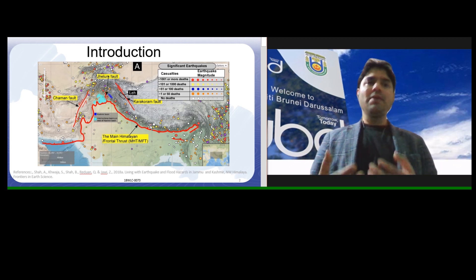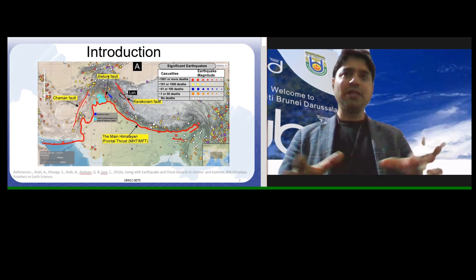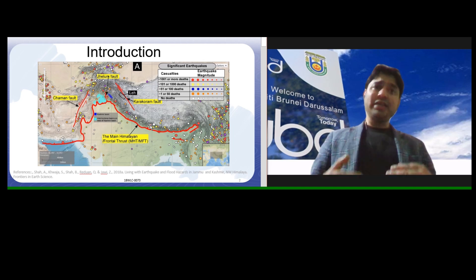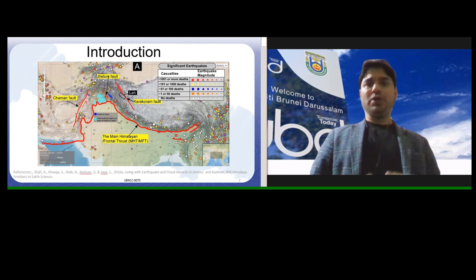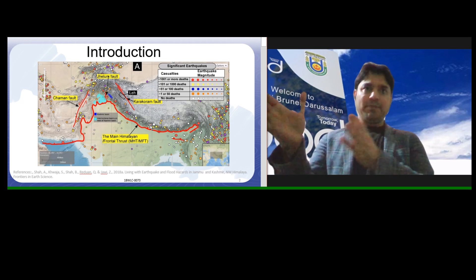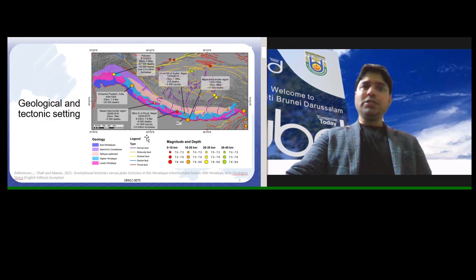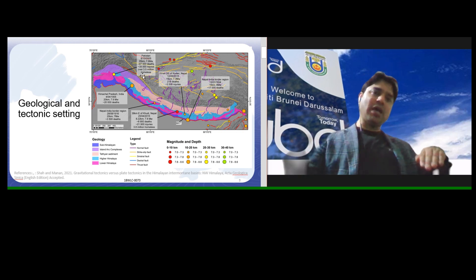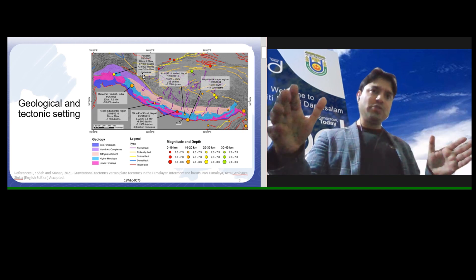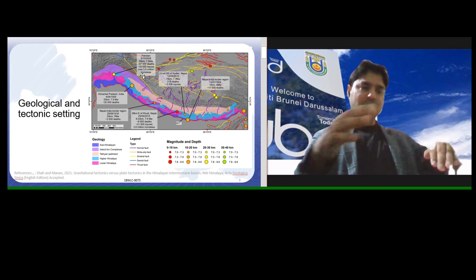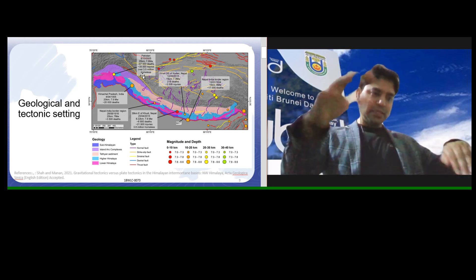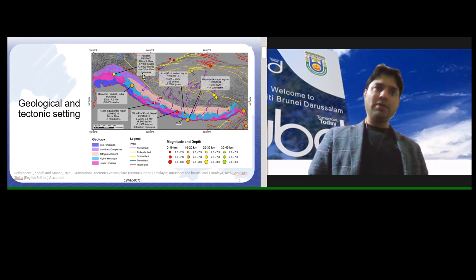Lakes form when there is a depression, and those depressions can be caused by either tectonic or non-tectonic forces. Looking at this Himalayan orogenic system, I believe most of the large lakes are directly created by tectonic forces. The geological background shows typical Himalayan rocks, arc rocks from past subduction, and island arc sequences. In between was a basin that got filled with sediments and later bulldozed by continuous convergence.